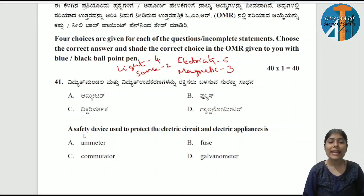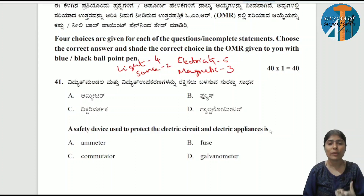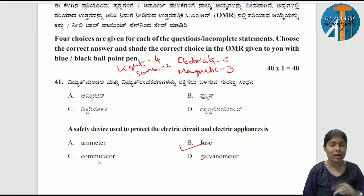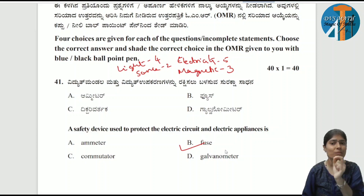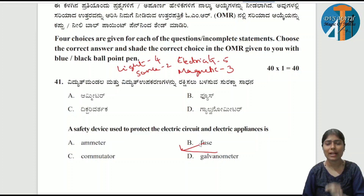First question: a safety device used to protect the electric circuit and electrical appliances. This same question appears in magnetic effects of electric current. The safety device we use in an electric circuit — the answer is fuse. Ammeter is not it; ammeter is used to measure electric current. Commutator reverses the direction of current. Galvanometer measures a small amount of current in the circuit. The safety device used to protect the electric circuit is fuse.